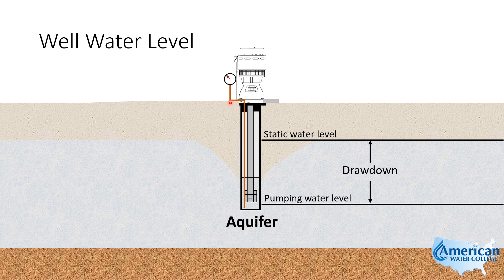To calculate static water level, we take the total length of the bubbler tube or air line and subtract out the column of water above the bottom of that line. We calculate how far above the bottom of the air line the water is by taking the pressure required to move air through and out the tube, and we convert that psi to feet by multiplying by 2.31 feet for every one psi. Let's take a look at how this works with a static water level problem.